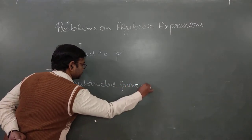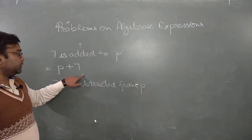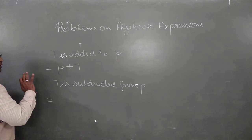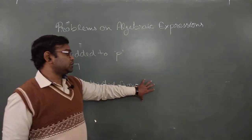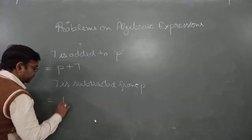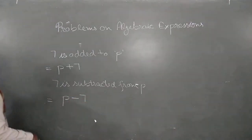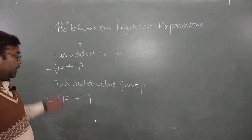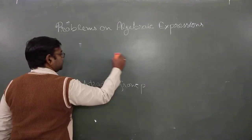If the same statement changes: 7 is subtracted from p. Here p must be at the first place because p is the bigger one and we are going to reduce 7 from p. So it's p minus 7. No need to use brackets. It's p minus 7.